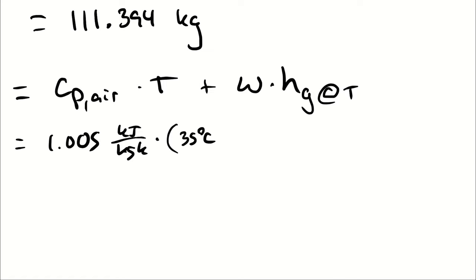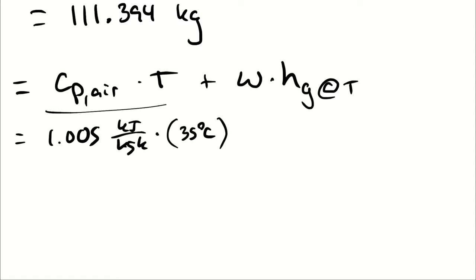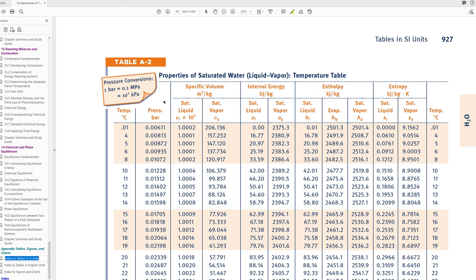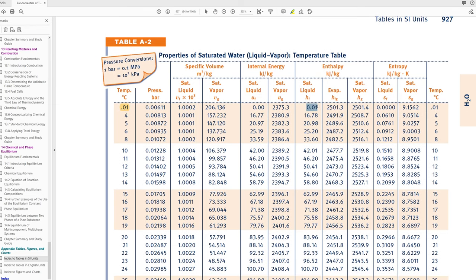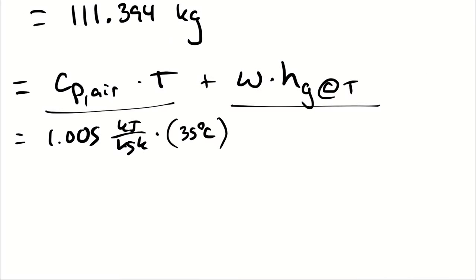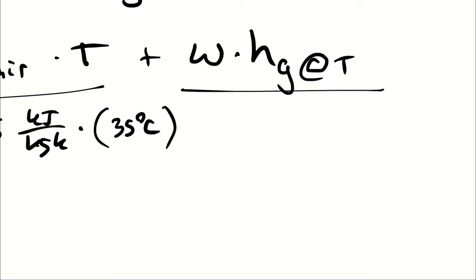We plug in 35 degrees Celsius — not converted to Kelvin — because we want the same zero point for air as for water. Since all enthalpies in the steam tables are relative to zero at zero degrees Celsius, at 0.01°C the enthalpy is 0.01. So to add together the enthalpy of the water vapor and the dry air, the datum points for our enthalpy need to be the same — especially when comparing against the psychrometric chart.